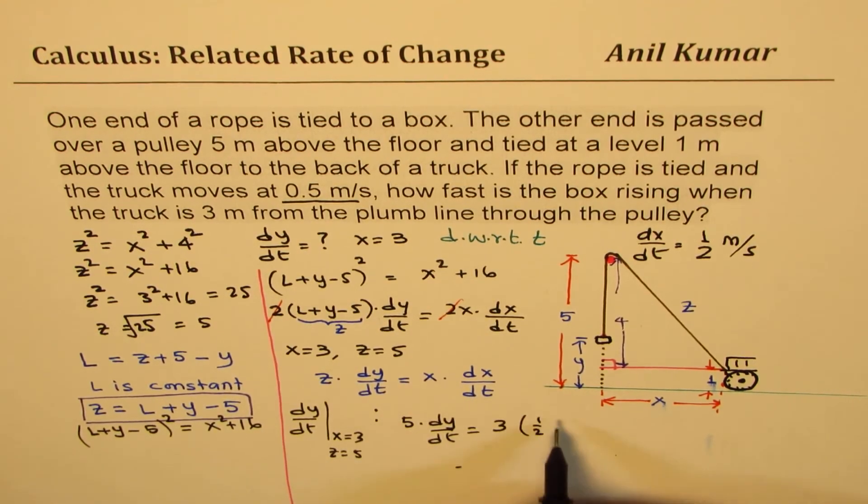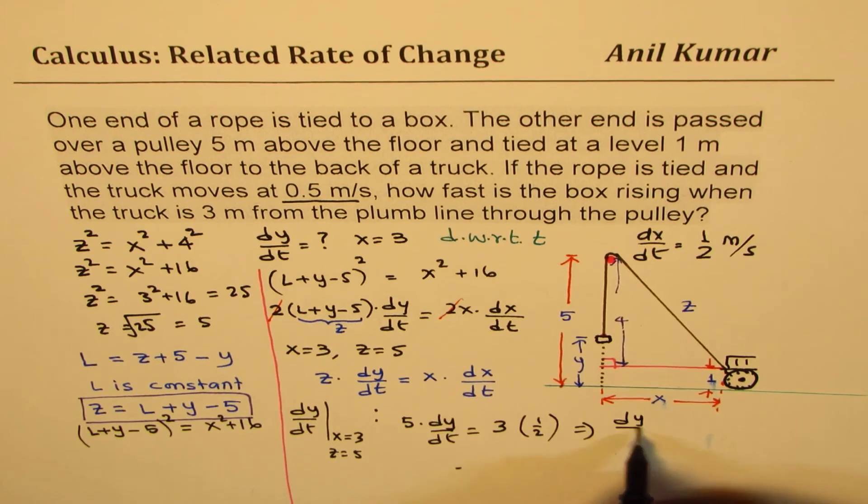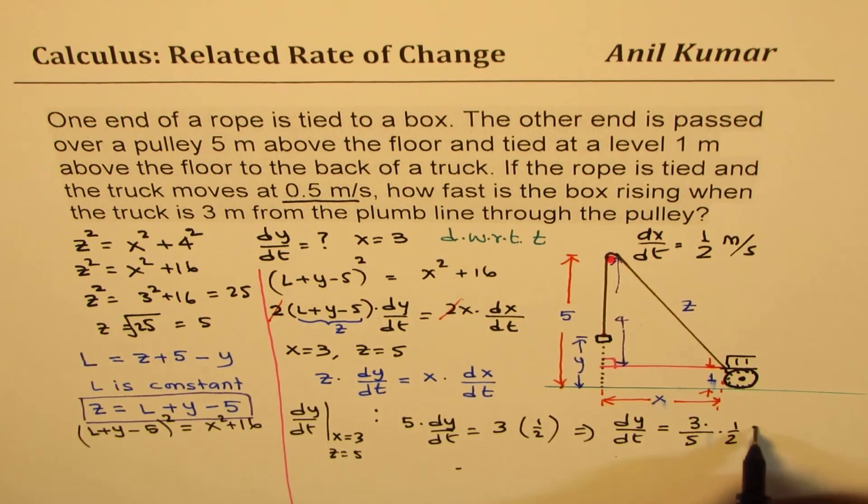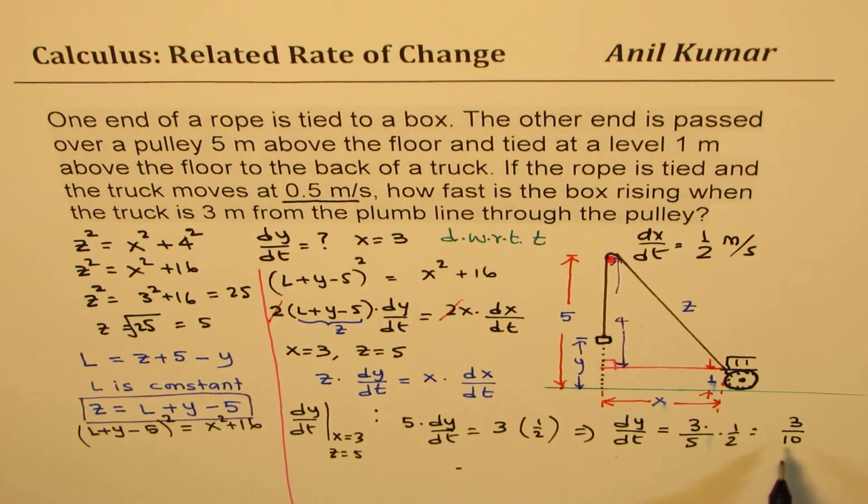Let me write in fractions, half. It's better. So we get from here that dy/dt equals 3 times 3 over 5 times half or 3 over 10. So that becomes our answer.